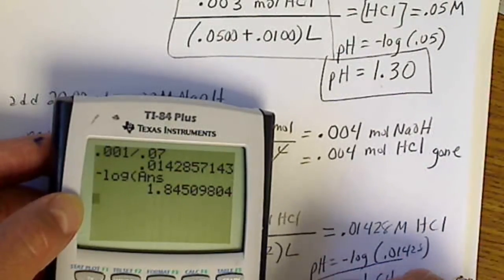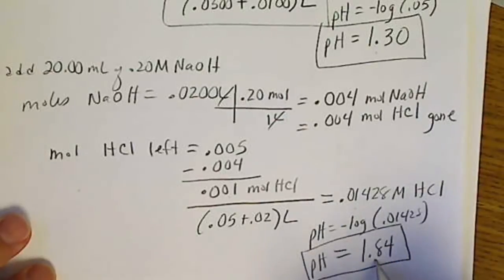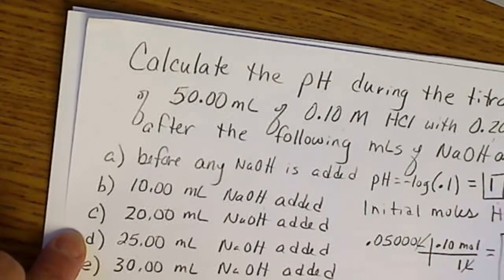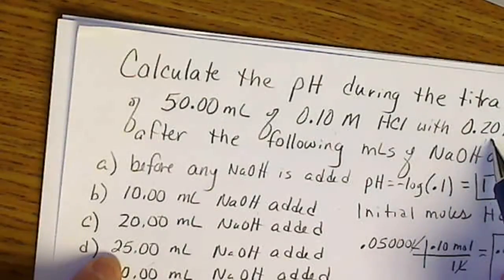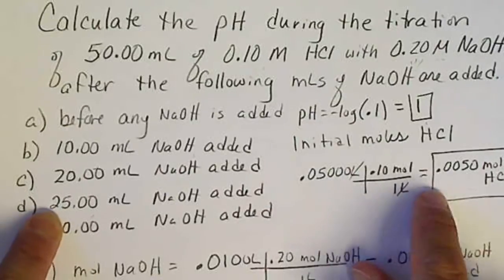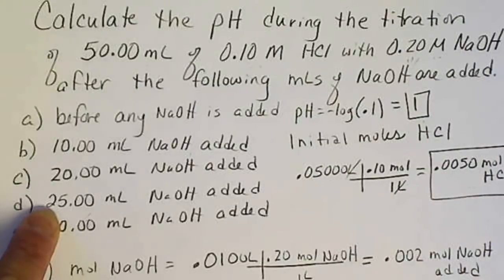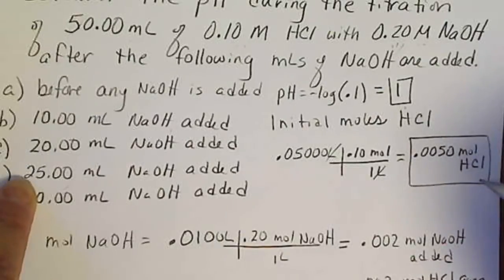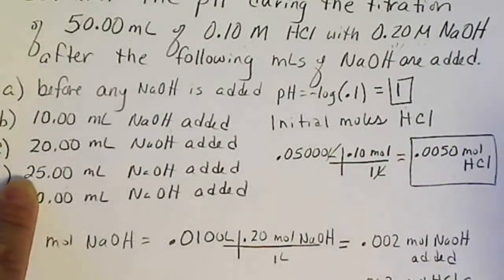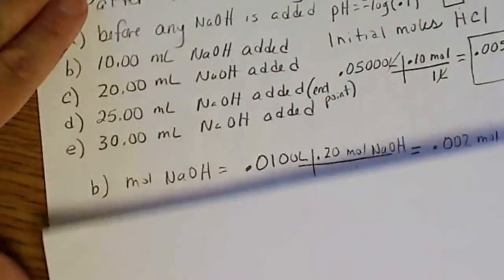So our pH is slowly going up. The fact that we still have a strong acid at relatively high concentration means we still have a really low pH. Now if we look at question D — adding 25 milliliters of 0.2 molar sodium hydroxide — we're going to see that we've added 0.005 moles of sodium hydroxide. We'll do that calculation and find 0 moles of HCl left over, meaning this is the end point. We don't have to recognize that ahead of time; we'll see it when we do the calculation.